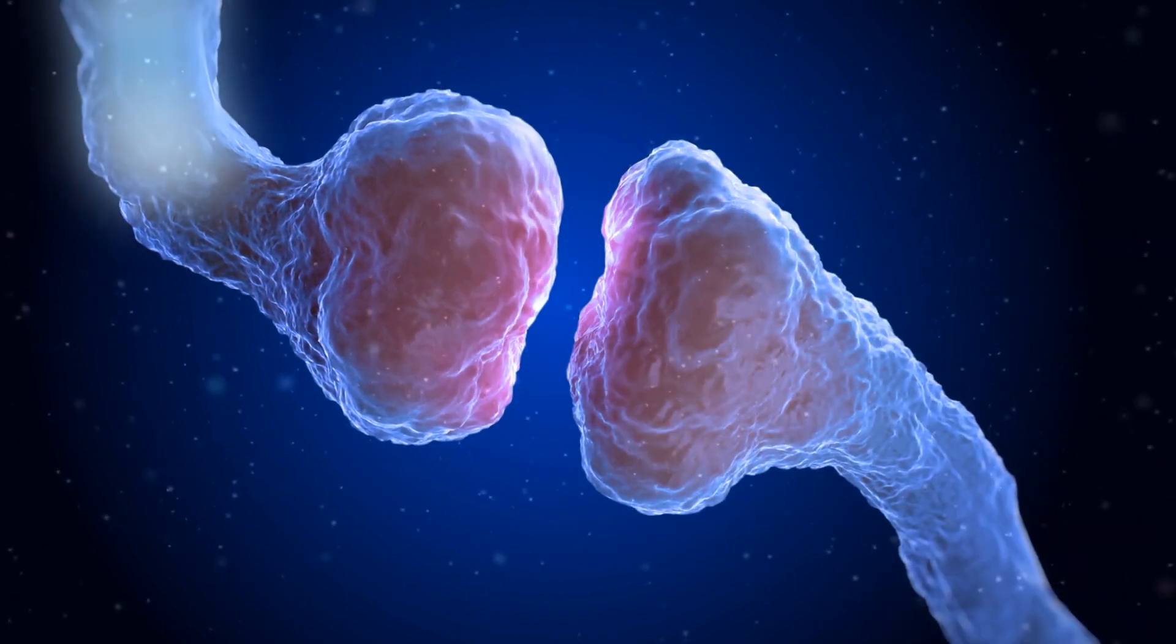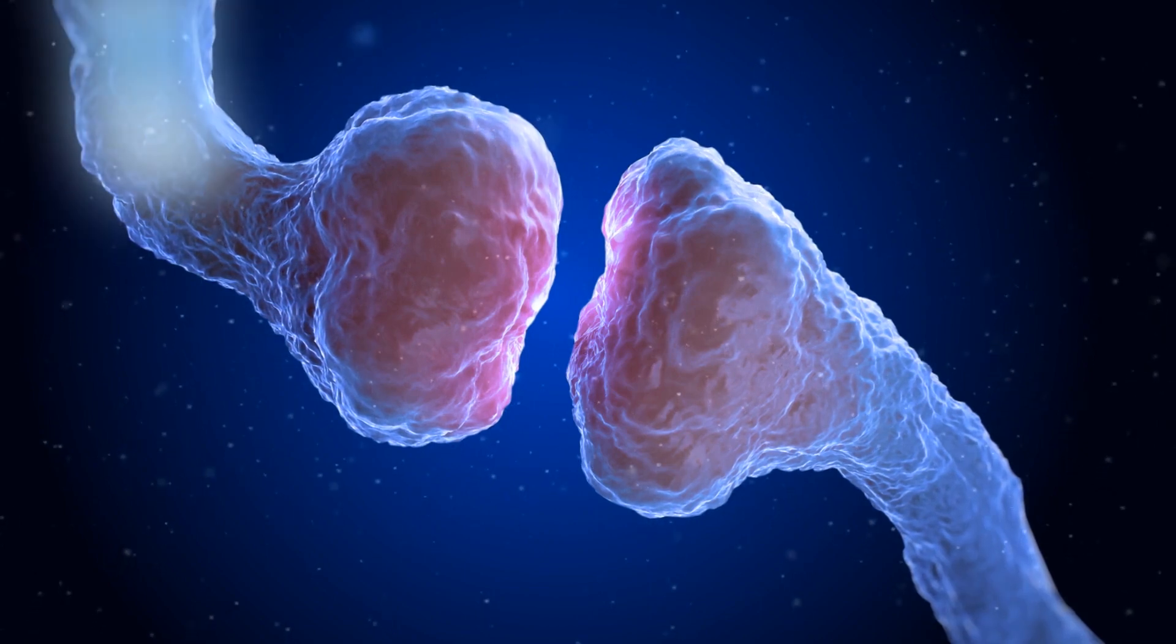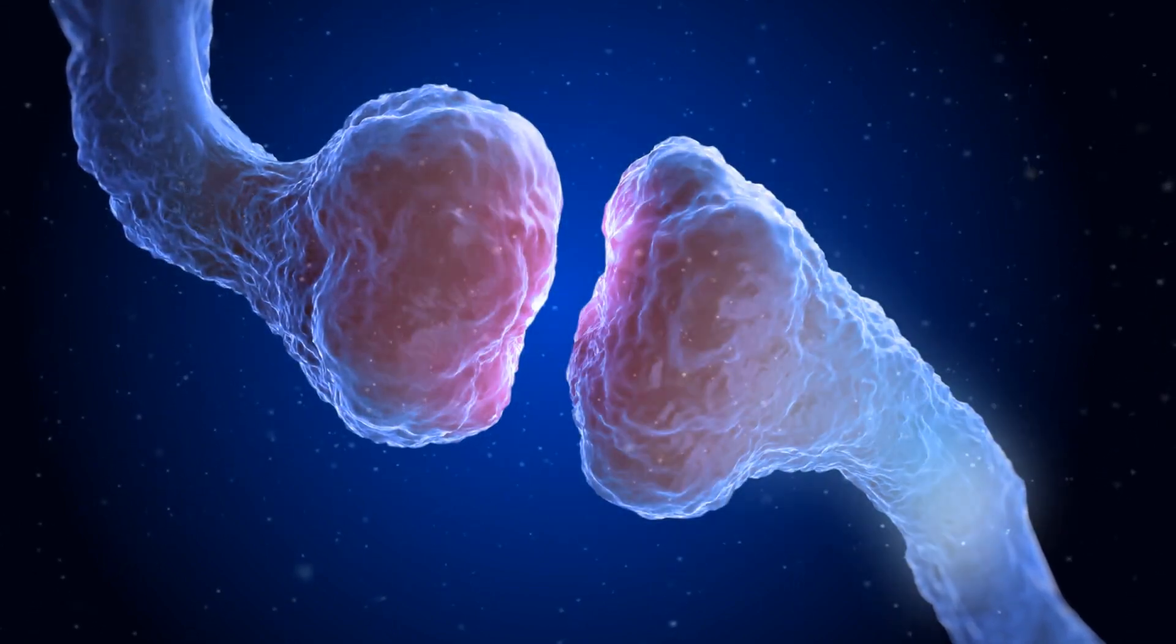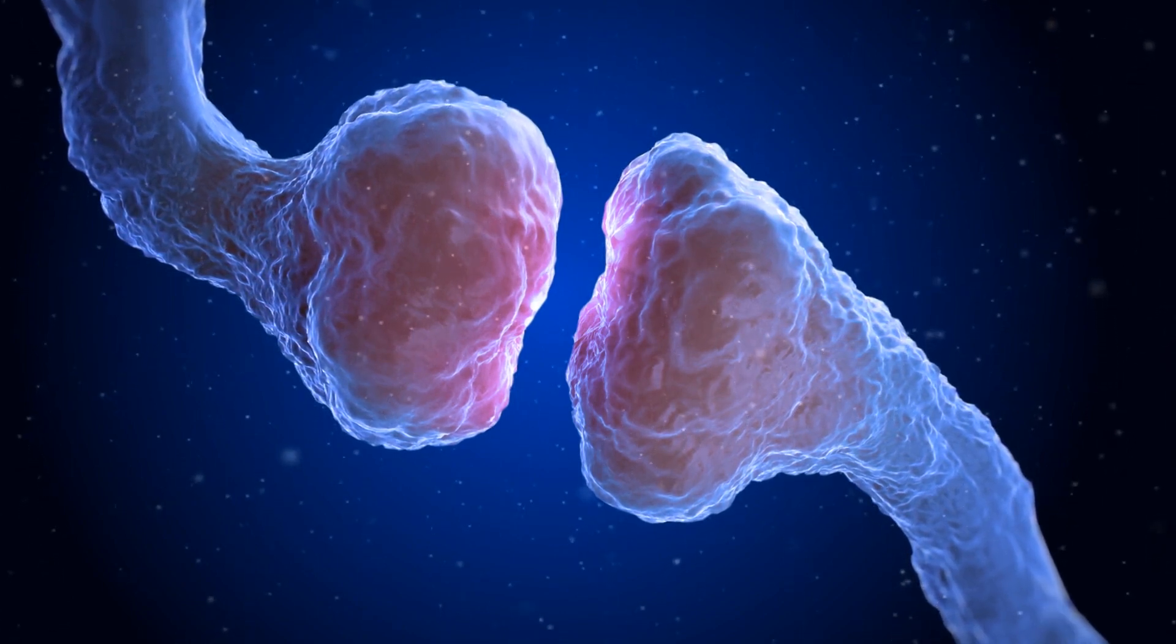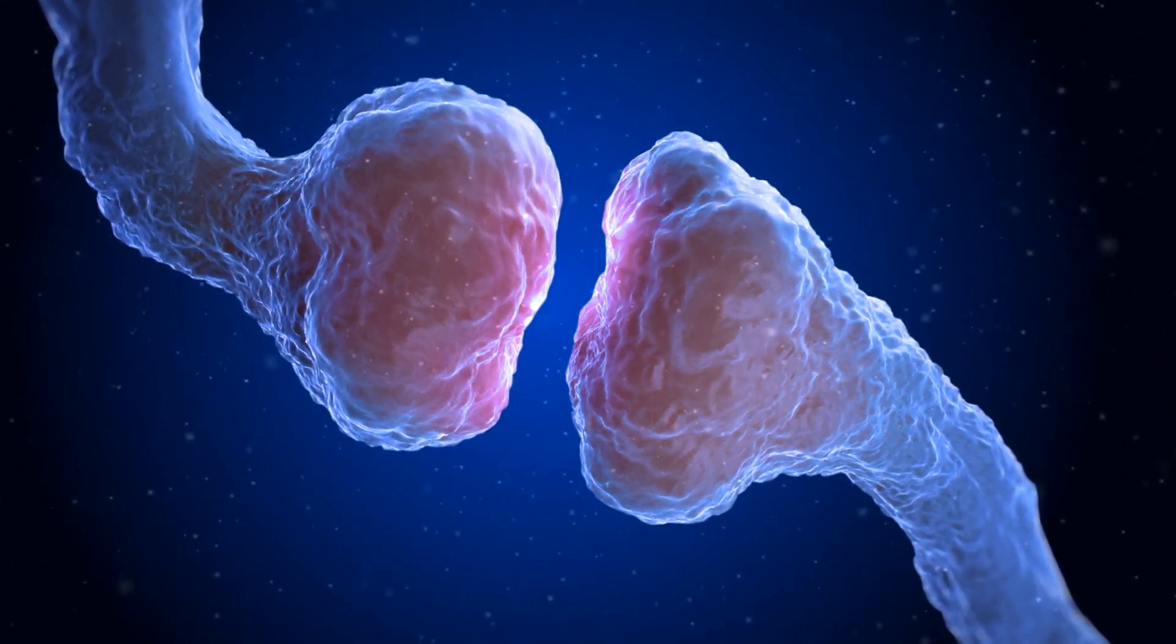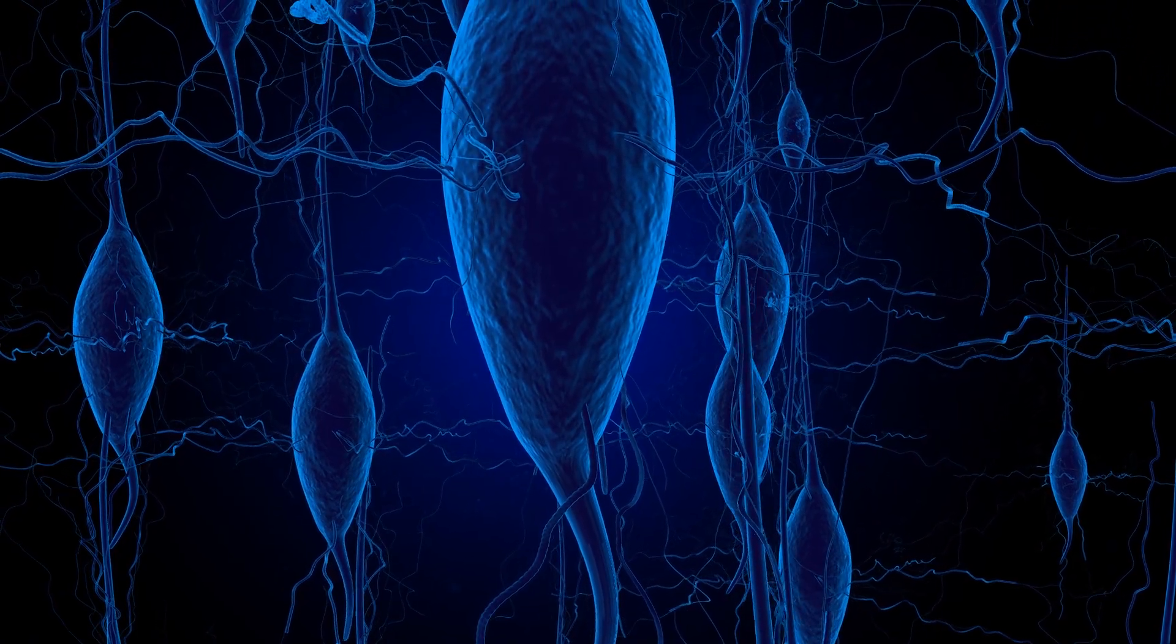The gates let in a flood of charged particles—sodium and potassium ions—which start up a new electrical signal in the receiving neuron. This simple chain of events, an electrical zap followed by chemical changes followed by another electrical zap, is the basis of all brain activity. It's how the neurons speak to each other.